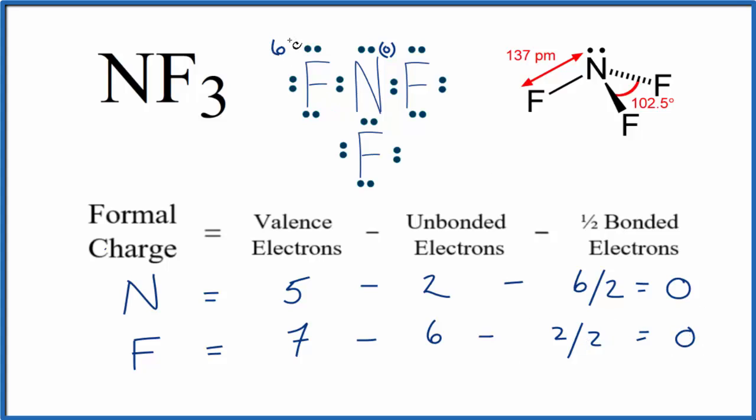So the formal charge on each of these fluorines here is going to be zero since they're all the same. So these are the formal charges for each element in NF3. Since they're all zero, this is going to be the most likely or favorable Lewis structure for NF3.